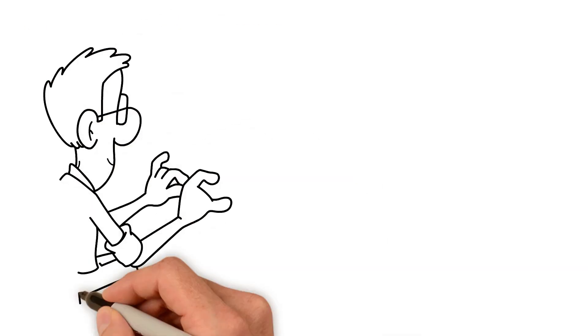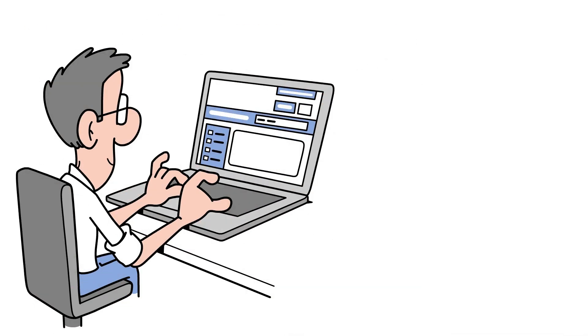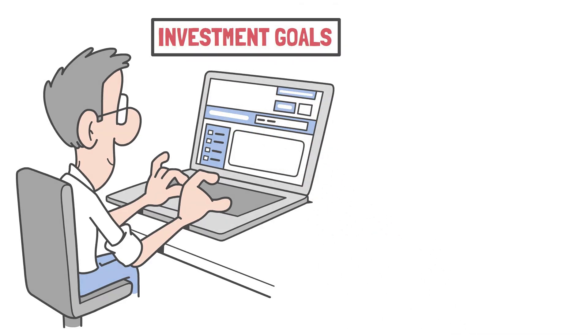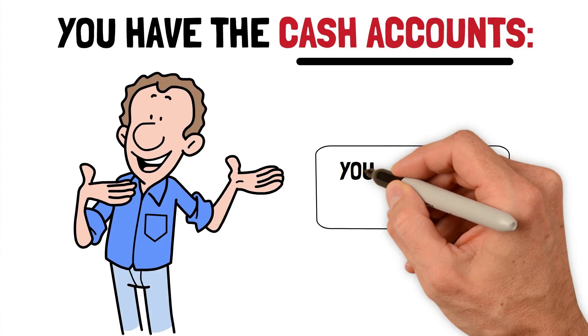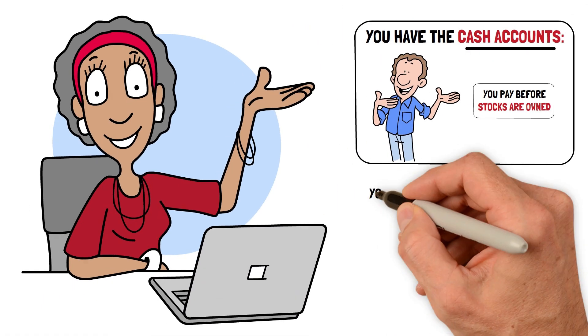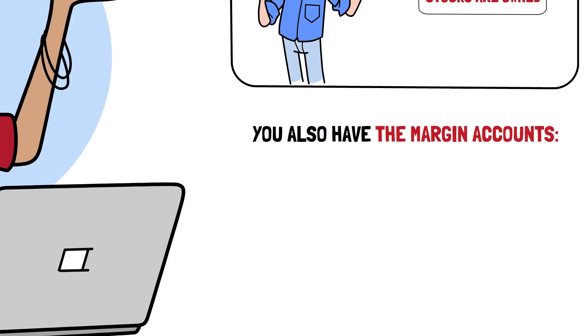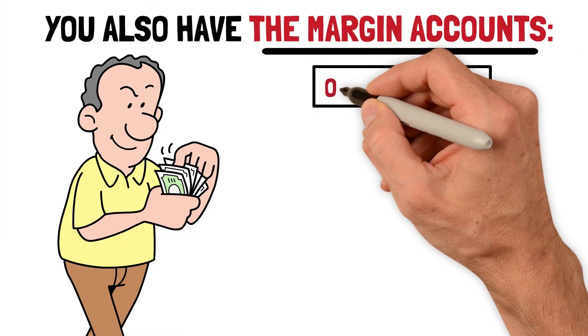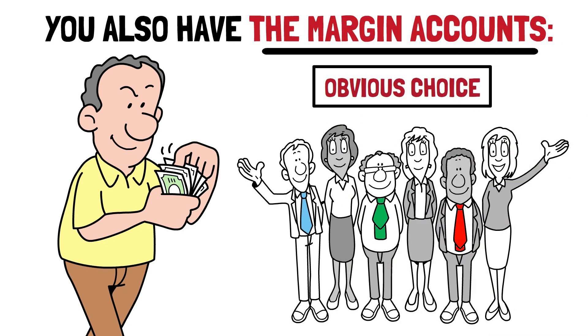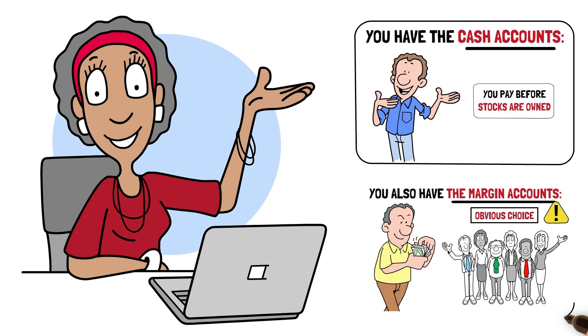You will also need to choose an account type. While choosing an account type, you should consider your investment goals. There are two types of trading accounts. You have the cash accounts. Cash accounts demand that you pay before stocks are owned. You also have the margin accounts. Margin accounts allow you to borrow money to boost your buying power. While this might seem like an obvious choice to new traders, margin accounts are riskier than cash accounts.